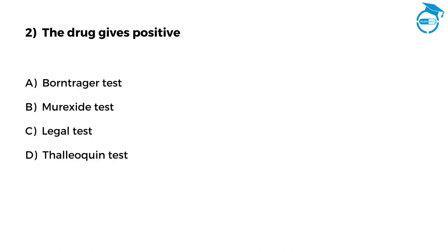The drug gives positive: Option A, Bontrager test. Option B, murexide test. Option C, legal test. Option D, thalukin test. You have got 7 seconds.